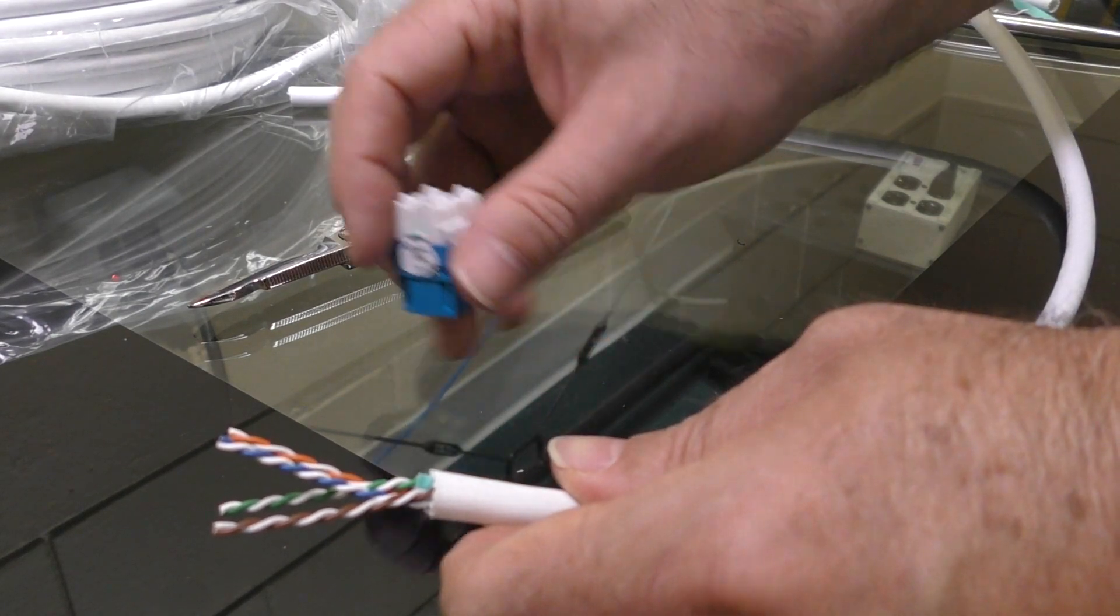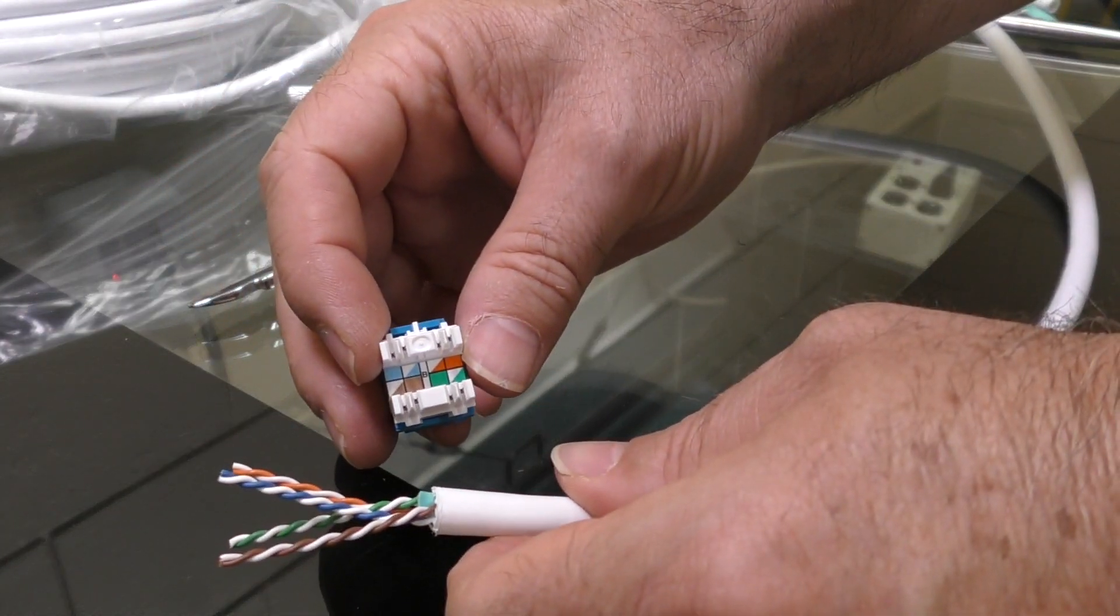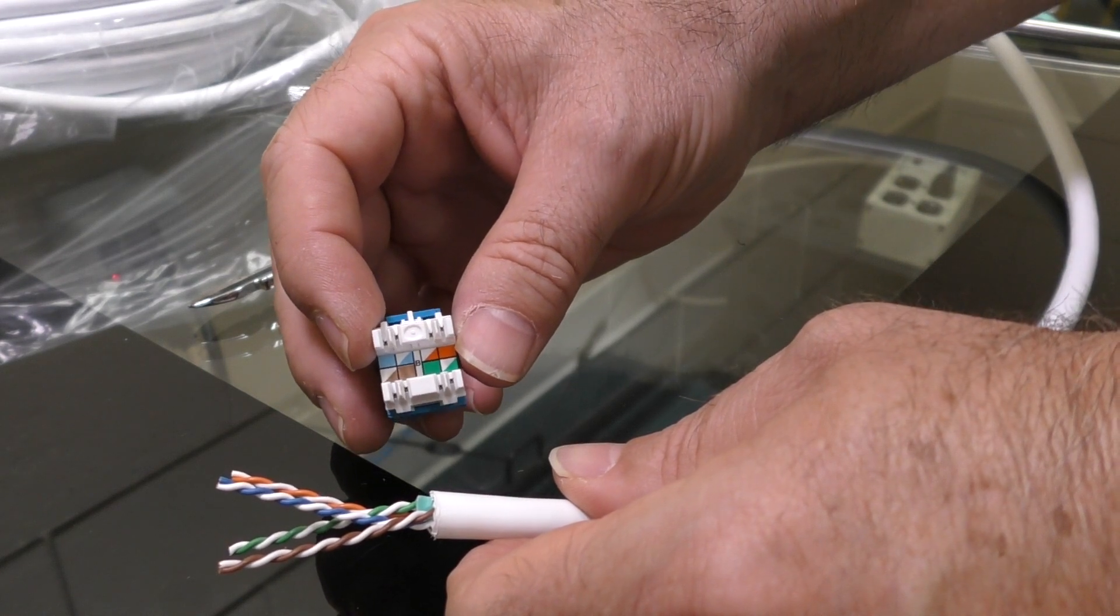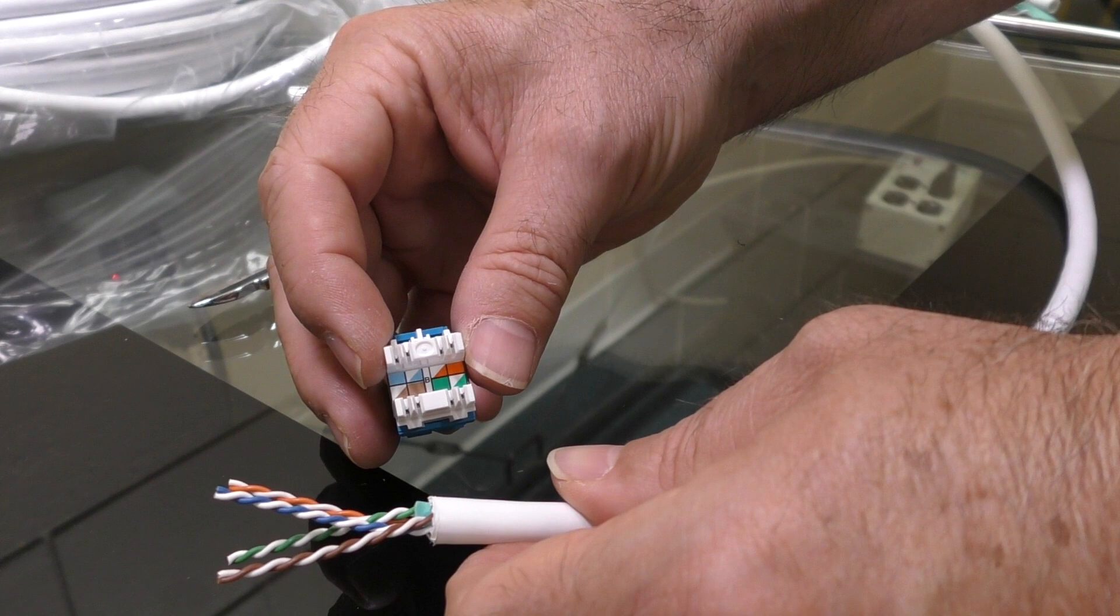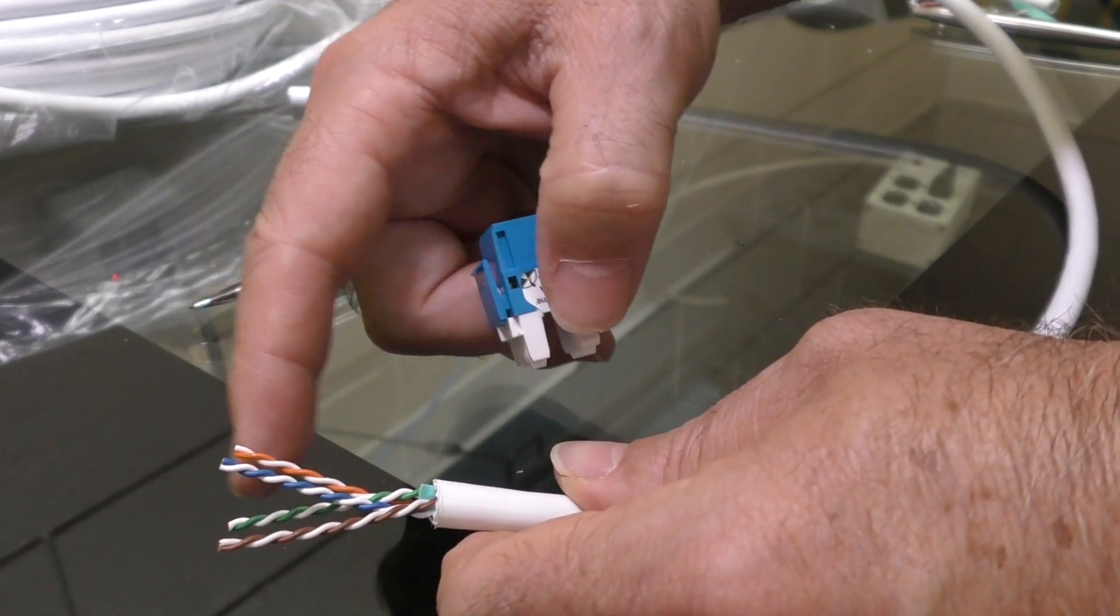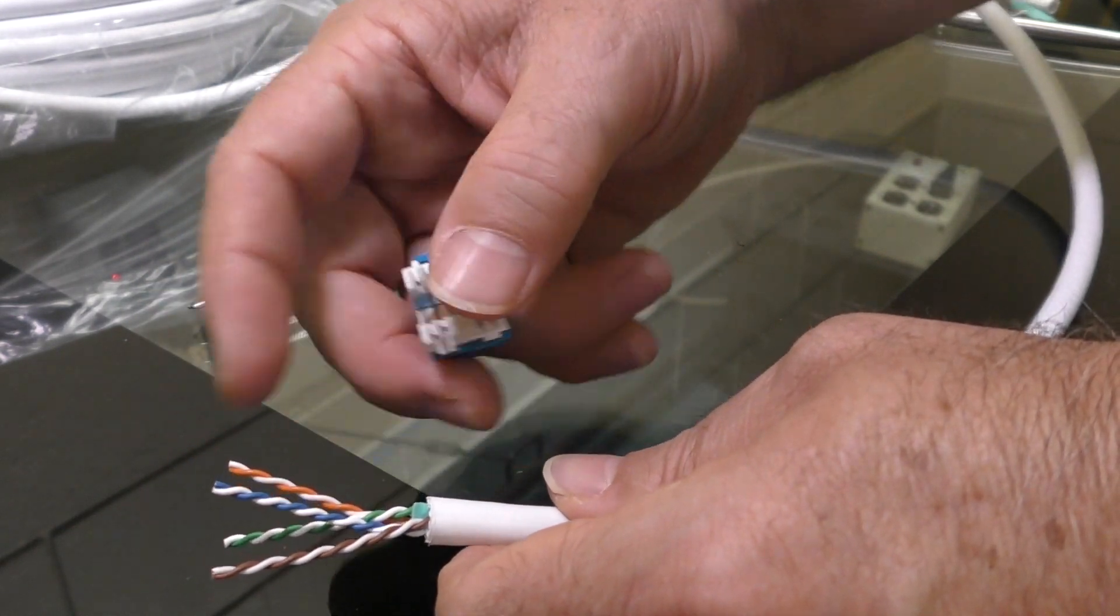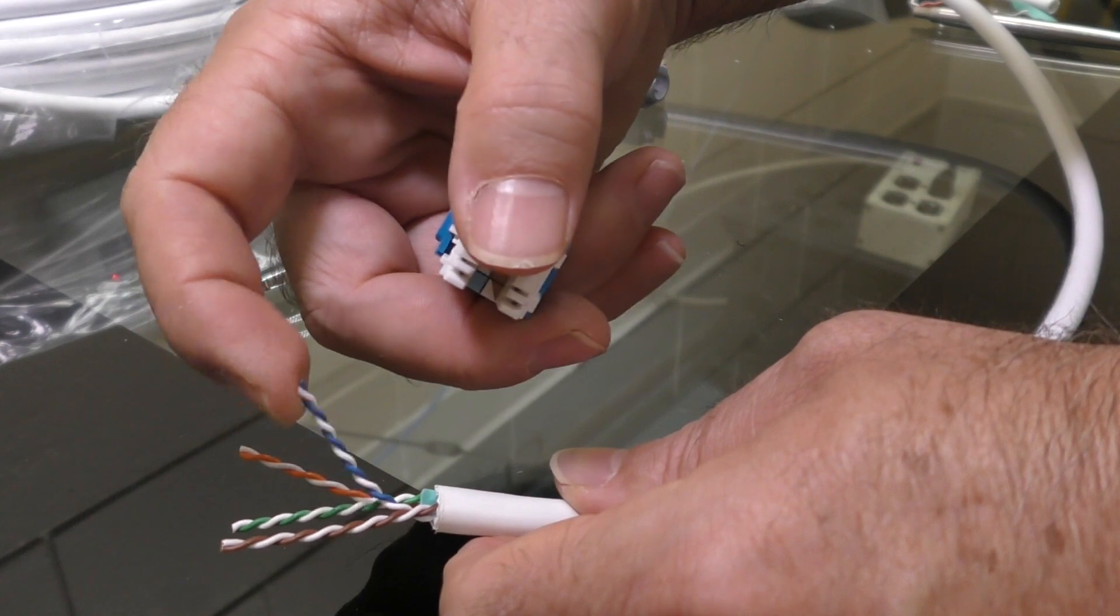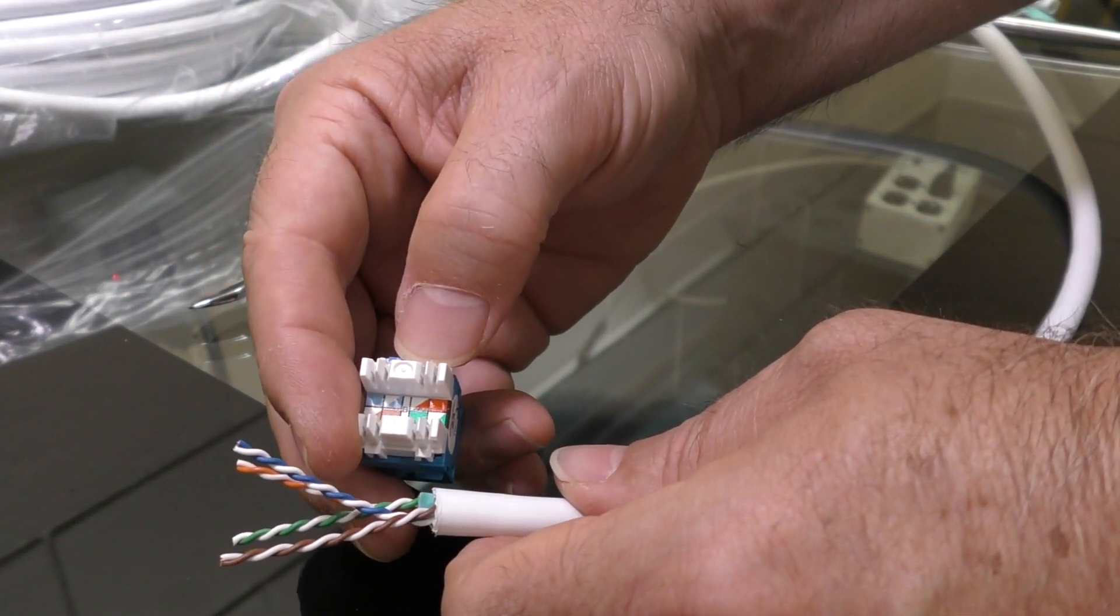The pairs have to get mapped onto the keystone jack where the colors match. See how on the inside of that jack there's a solid orange and an orange slash white, and a solid blue and a blue slash white? Those correspond to these colors too. I'll put the solid blue wire onto the solid blue square, and the white wire that's wrapped with blue onto the white slash blue spot.